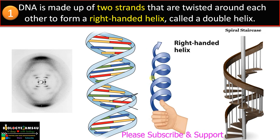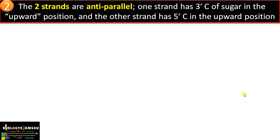Point number two: DNA is a right-handed double helix, just like a spiral staircase. The sugar and phosphate form the backbone, and the stairs are formed by the nitrogenous bases.